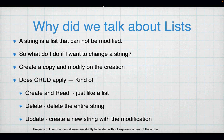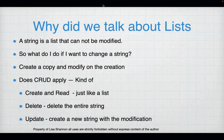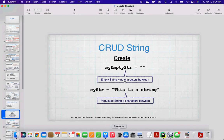Why do we talk about lists? A string is a list, but it can't be modified. So what happens when you want to change a string? We can create a copy and modify it on creation, but we can't change the old string. CRUD kind of applies — we can create and read a string just like a list, we can delete the entire string, but when we update we actually have to create a new string. Python will call functions that create the new string in the process.